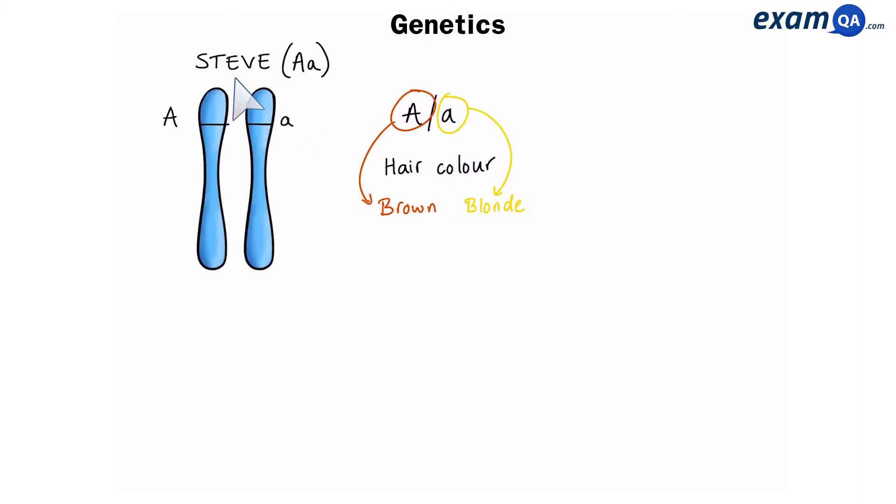Okay, so here we have Steve, who has a big A and a small a. So Steve is heterozygous. Natasha also has a big A and small a, so she is also heterozygous.